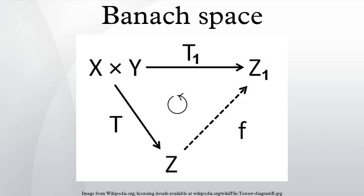In mathematics, more specifically in functional analysis, a Banach space is a complete normed vector space. Thus, a Banach space is a vector space with a metric that allows the computation of vector length and distance between vectors, and is complete in the sense that a Cauchy sequence of vectors always converges to a well-defined limit that is within the space.